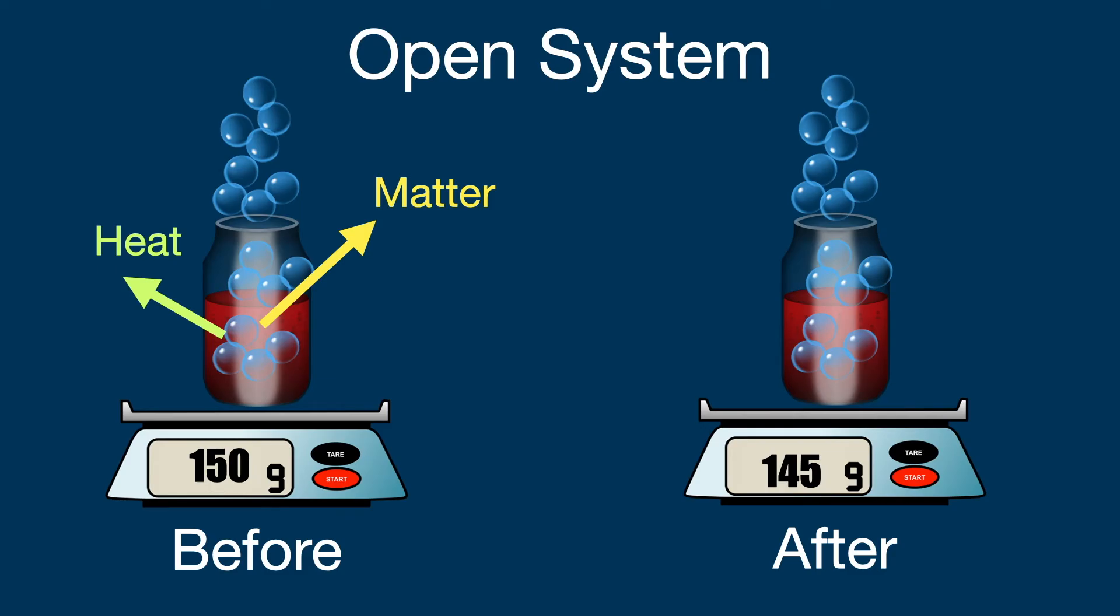So as you can see, the before and after mass is different, and that is because matter can leave the system. Heat can also leave the system. Matter can also enter the system, and heat can also enter the system.